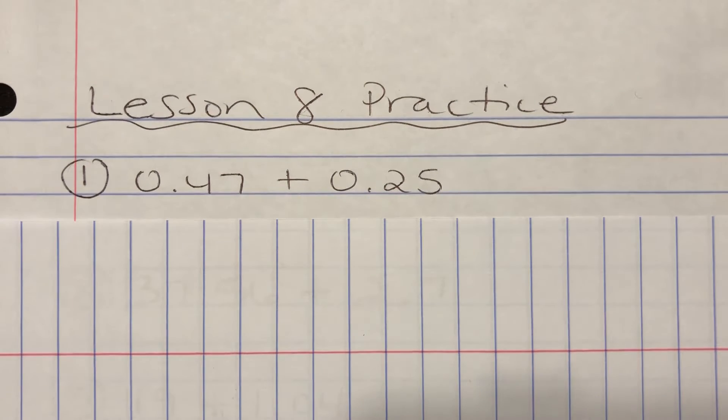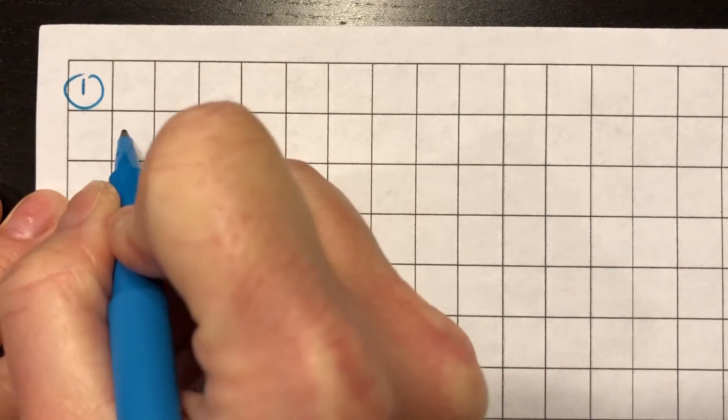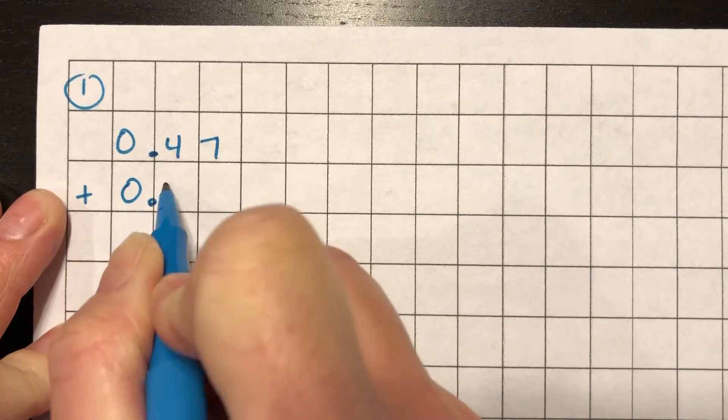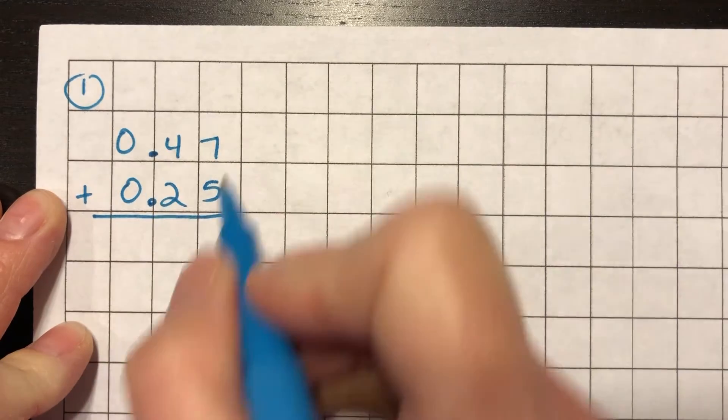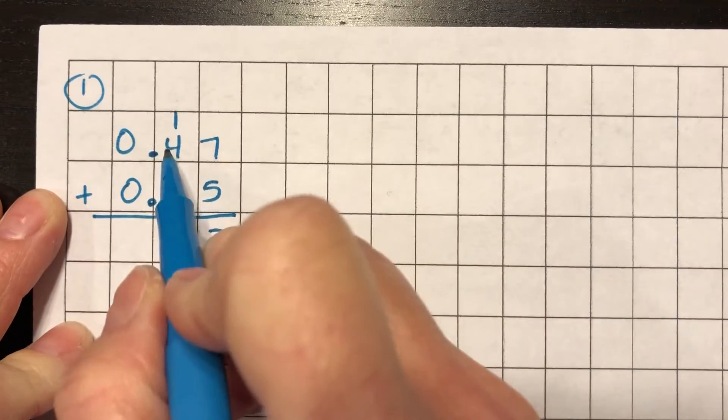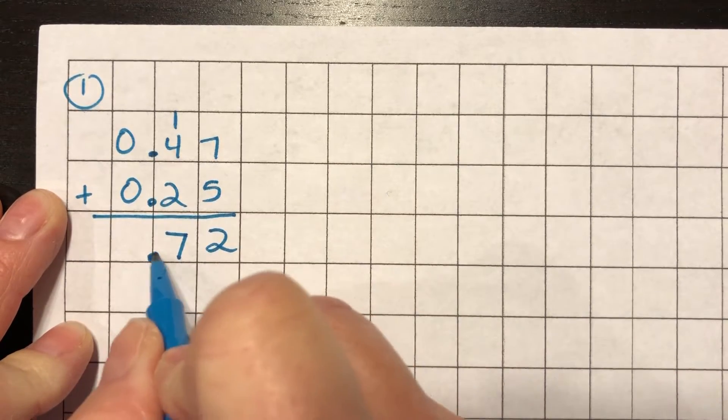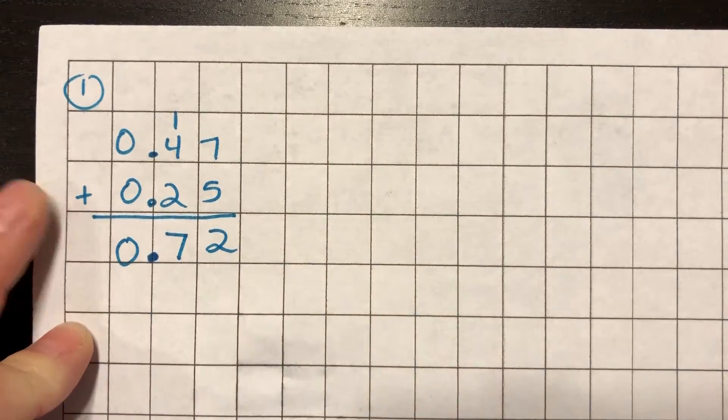47 hundredths plus 25 hundredths. Okay so when you're solving this and I'm gonna kind of scooch my paper back and forth, when you set this up and I'm gonna set mine up on the grid paper and this is example number one. 0.47 plus 0.25. You should have this set up so that the hundredths match and the tenths match. 7 plus 5 is 12, 4 plus 1 is 5 plus 2 is 7. My decimal point stays where it is at so that I can have the tenths and the hundredths and bring down your zero. So that's what you should have for number one.